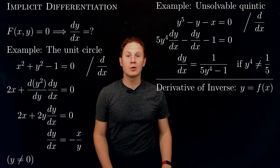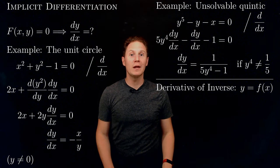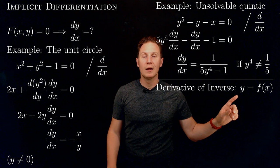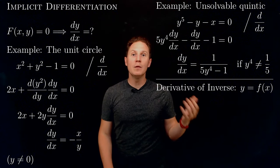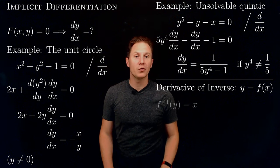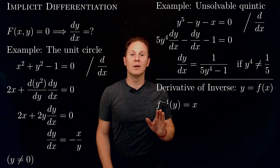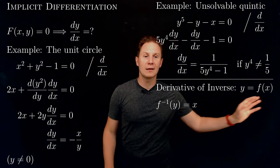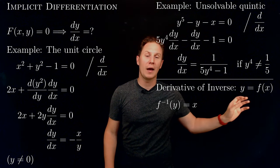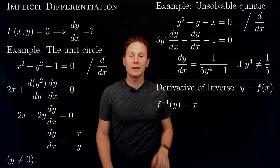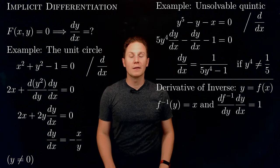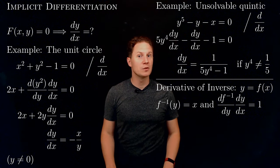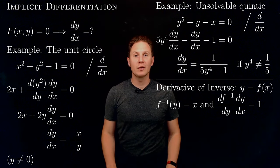Implicit differentiation can even be used to find the derivative of inverse functions. Imagine that y is given explicitly as a function of x with a formula. If you find the inverse function f⁻¹ and apply it to both sides of the relation, on the left hand side you get f⁻¹ applied to y, and on the right hand side you get f⁻¹ of f of x, which is exactly x. Differentiating both sides with respect to x and equating the derivatives — by the chain rule — gives the derivative of f⁻¹ with respect to y times dy/dx equals 1.